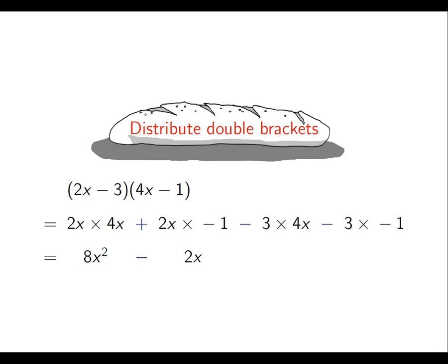Similarly, with the next term, we have a negative 3 and a positive 4x. So that will remain as a negative, and 3 times 4 is 12. Finally, we have a negative times a negative, which also produces a plus. And 3 times 1 is 3.